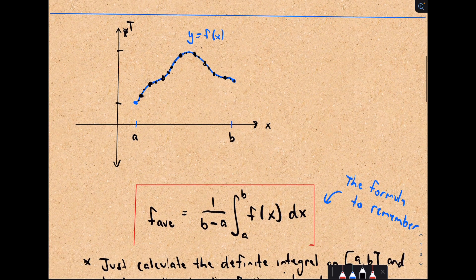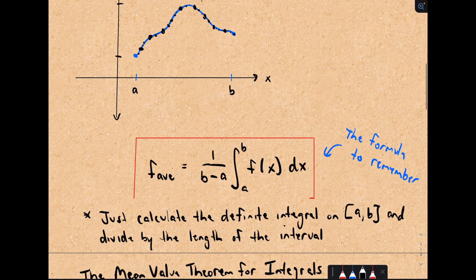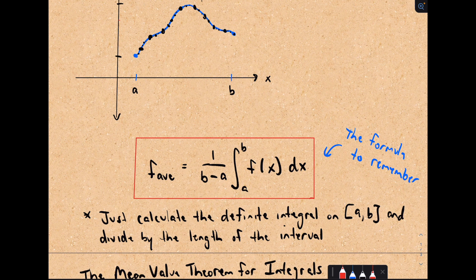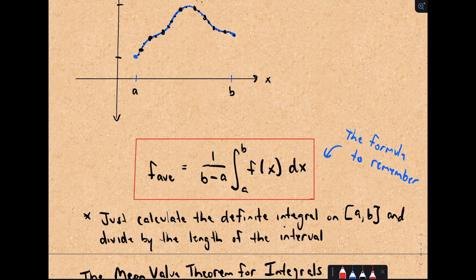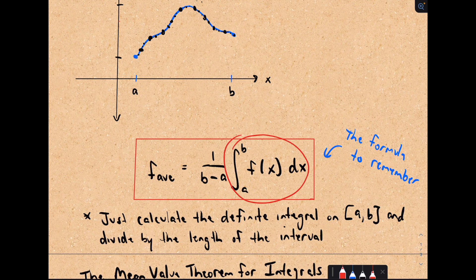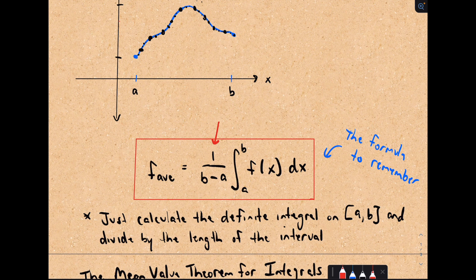It turns out if we do that to compute it we end up getting a definite integral. So if we're on the interval from a to b, all you have to do is compute a definite integral of your function over that closed interval a to b and then multiply by 1 over b minus a or equivalently divide by the length of the interval.